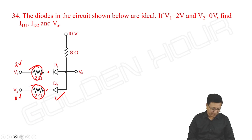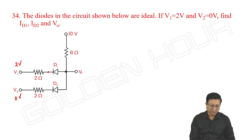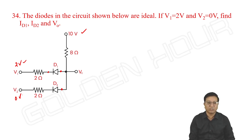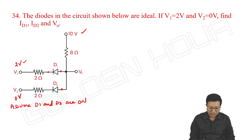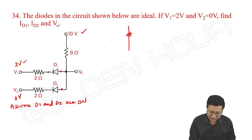Then how do we solve this problem? If you observe D1, its anode is going towards 10 volts and cathode is going towards 2 volts, so D1 is on. And D2, its anode is also going towards 10 volts and cathode is going towards 0 volts, so D2 is also on. Assume D1 and D2 are on. They act as short circuits and the corresponding equivalent circuit appears in this fashion.